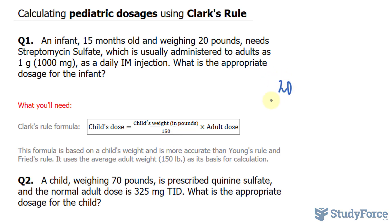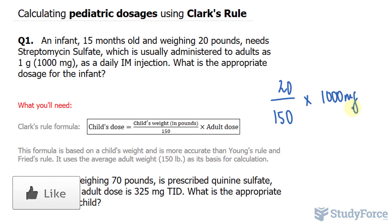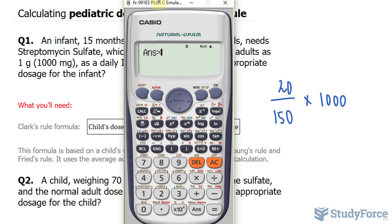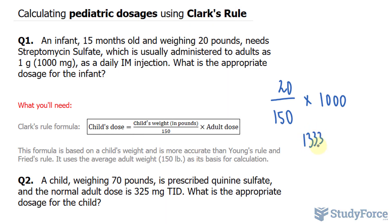So I'll take 20 divided by 150, multiplied by the adult dose of 1,000 milligrams. Using our calculator, we take 20 divided by 150 and then multiply this number by 1,000. We should end up with 133.3 repeating — to one decimal place, that's 133.3 milligrams. So based on Clark's rule, this child weighing 20 pounds should be given 133.3 milligrams.